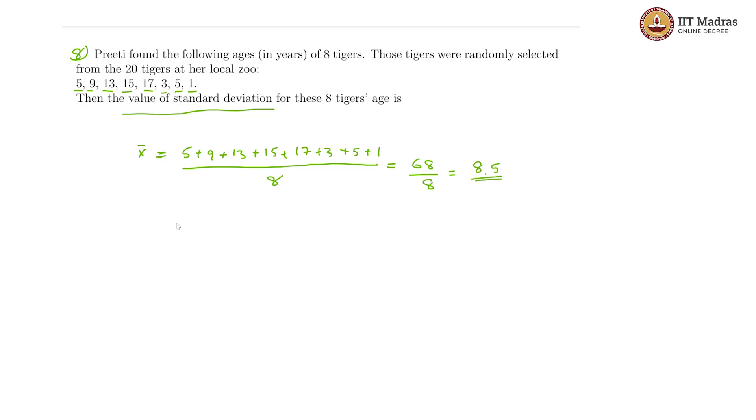So this is our mean. Now we can calculate the standard deviation directly as the square root of sum of the squares of the deviations. Here I have used x bar minus xi. Deviation is actually xi minus x bar, but since we are squaring, the sign does not matter. Here i goes from 1 to 8, divided by 7 because it is sample standard deviation.